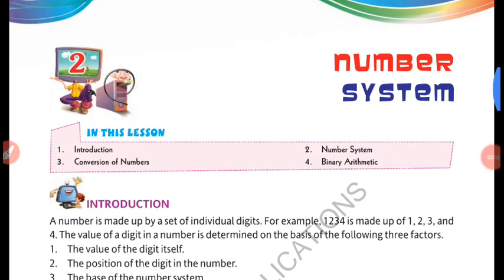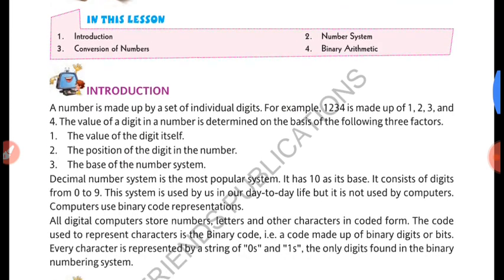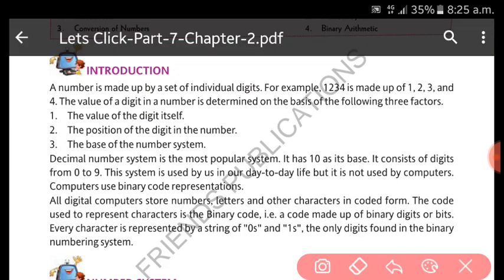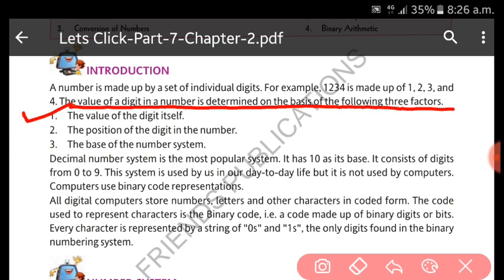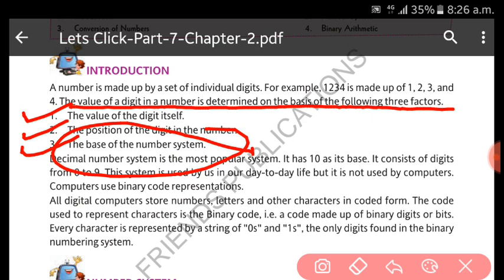Let us understand lesson two: Number System. In this lesson we will cover the ways to represent numbers in a computer. The value of a digit in a number is determined on the basis of three factors: first, the value of the digit itself; second, the position of the digit in the number; and third, the base of the number system. As per the base, we will convert a number into a different number system.